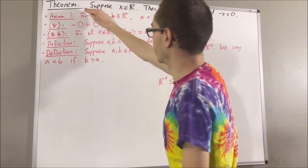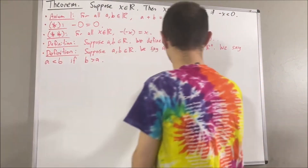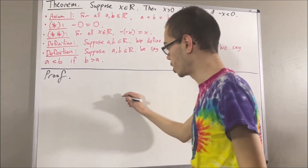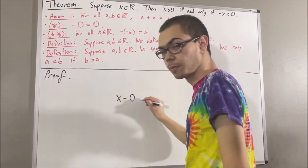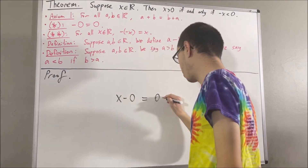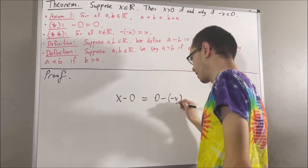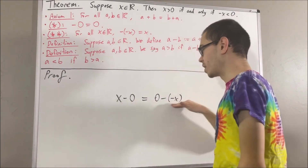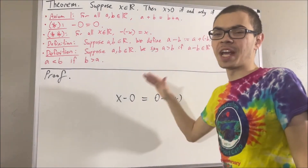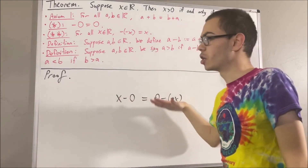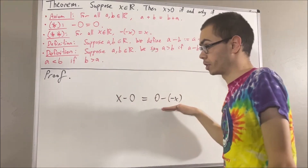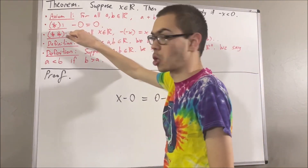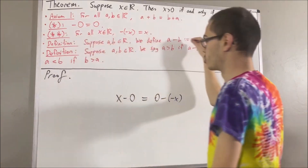Now let's get into proving this theorem. To start the proof, we're first going to show that x minus zero is equal to zero minus the negative of x. This is going to be useful. To show that these two expressions are equal, we are going to establish a chain of equalities, applying axiom one, the result that the negative of zero is zero, the result that the negative of negative x equals x, and the definition of subtraction.